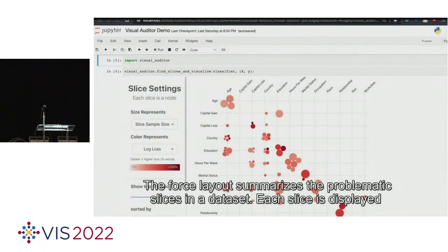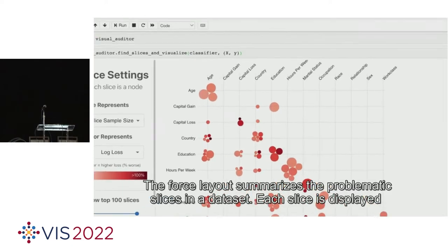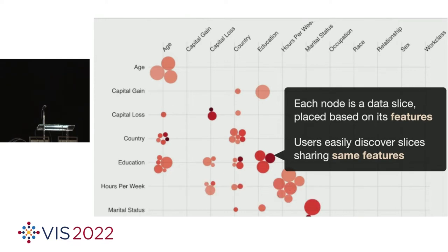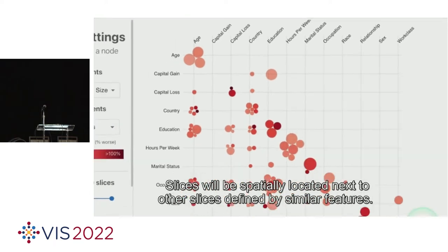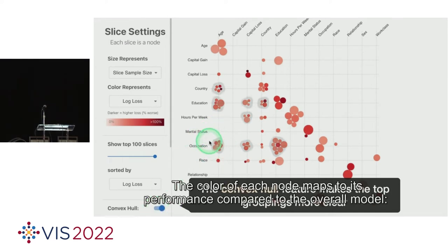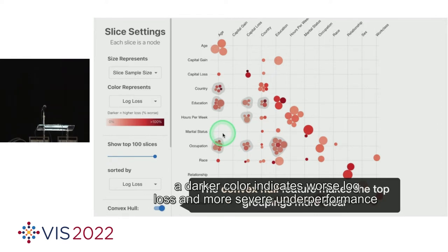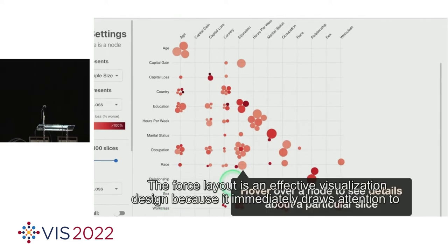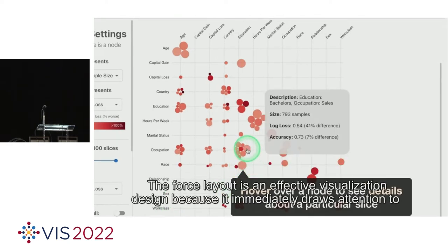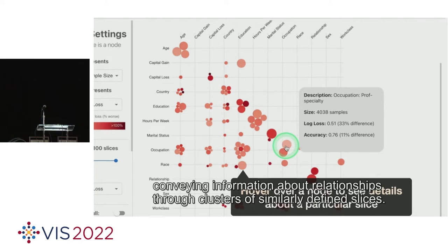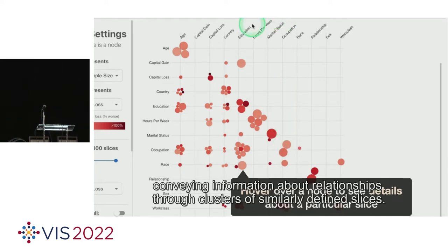The force layout summarizes the problematic slices in a dataset. Each slice is displayed as a node on a grid and is mapped to an area defined by the intersection of its features. Slices will be spatially located next to other slices defined by similar features. The color of each node maps to its performance compared to the overall model — a darker color indicates worse log loss and more severe underperformance. The size of each node represents the sample size of the slice. The force layout immediately draws attention to the largest and most problematic slices through color and size codings.